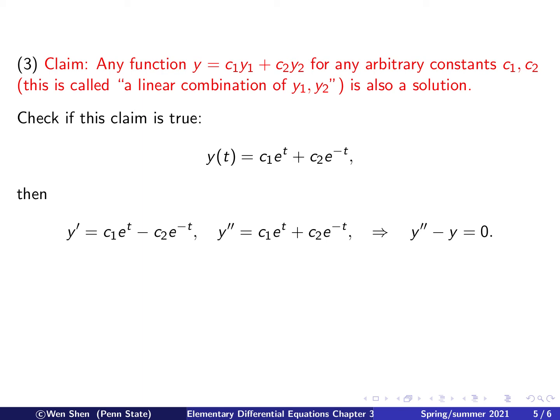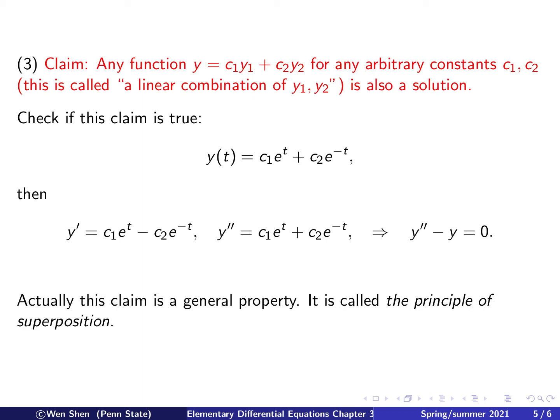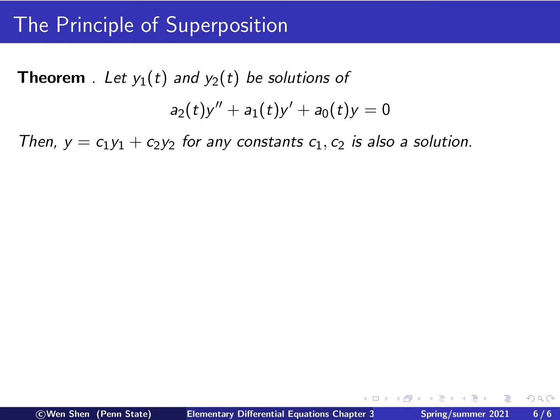We found infinitely many solutions, since c1 and c2 are arbitrary constants. This claim is a general property for linear equations with a homogeneous right-hand side, and it has a name: the principle of superposition. Superposition means if you find solutions, you can add them together and still have a solution.